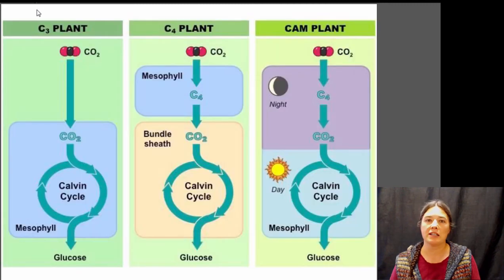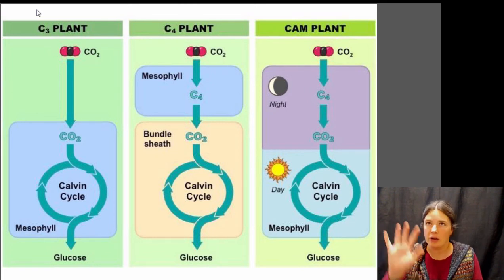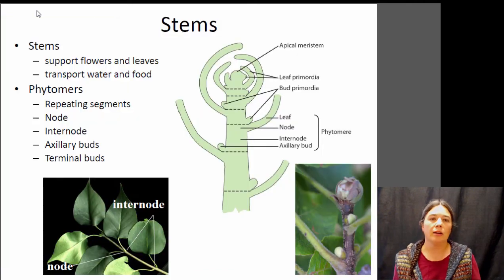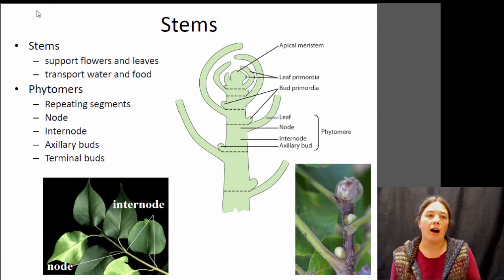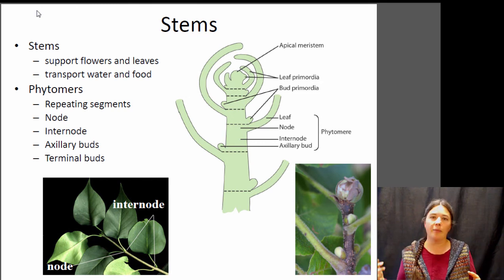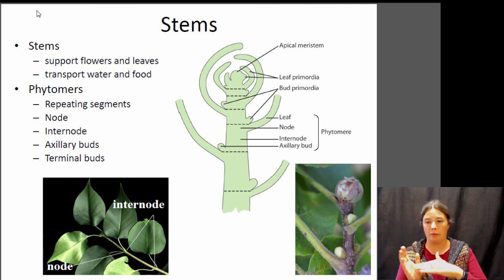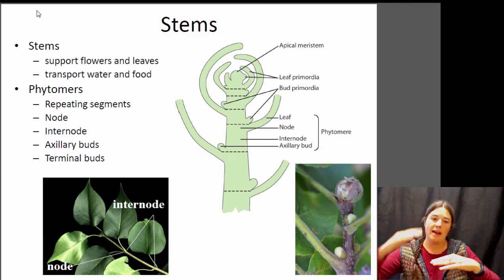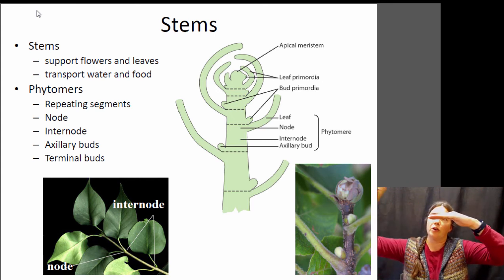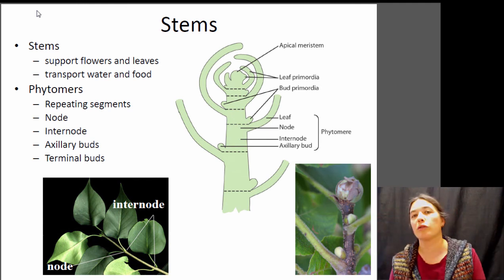The book goes into a lot more detail about C4 and CAM plants — don't worry about that detail too much for this class; just generally know why you would want these different cycles. Moving on to our last structure: stems. Stems provide support for your leaves and flowers and are a major transport system — kind of the highways of the plant. Stems have repeating segments: there's a node, where a new branch or leaf will come off with a bud, and then an internode period where it's just stem, then another node with another leaf and bud, and so on.